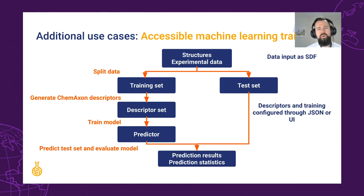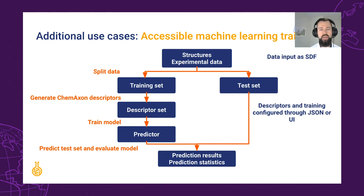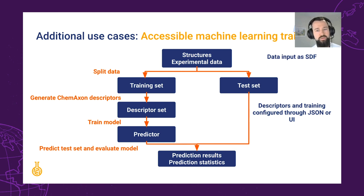Another key point is the accessibility of generating your own machine learning models. Our calculators team is developing an easy-to-use trainer engine, which allows you to enrich your real-life data with all calculators and descriptors, and train a variety of models. The value here lies in the integration of the ChemAxon descriptors, which are directly part of the application. I encourage you to join us at our Tech Corner session for a data preparation and AI talk to learn more.